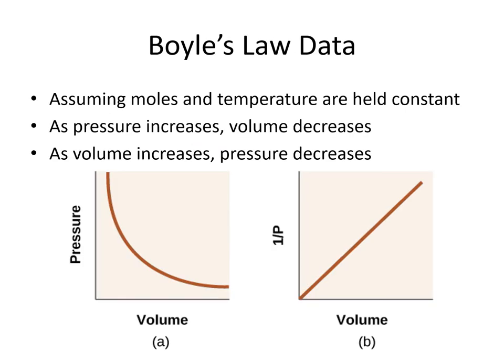We can graph Boyle's law data, but if we graph pressure versus volume we get a curve, not a straight line. Because of the inverse proportionality, to get a straight line we need to graph 1/pressure versus volume, or pressure versus 1/volume. As pressure increases, volume decreases, and vice versa. Just like with our other individual gas laws, we make some assumptions: since we're varying volume and pressure, moles and temperature are held constant.